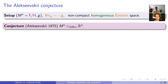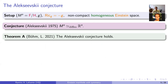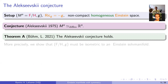Our main result, joint work with Christoph Böhm, is that the Alekseevsky conjecture holds in all dimensions. We prove a bit more: any homogeneous Einstein space with negative Einstein constant must be isometric to an Einstein solvmanifold. In particular, these are all simply connected and hence diffeomorphic to Euclidean space.